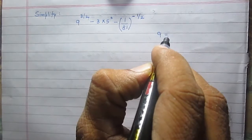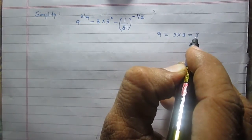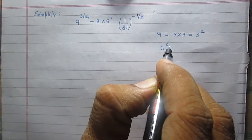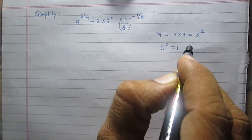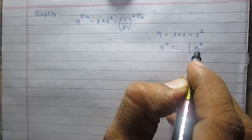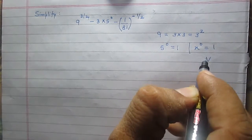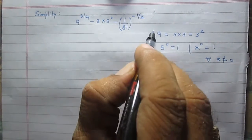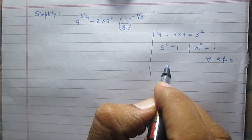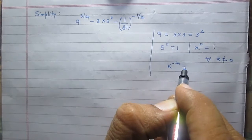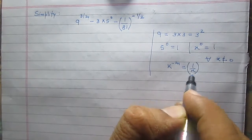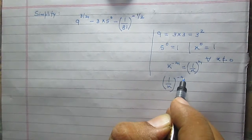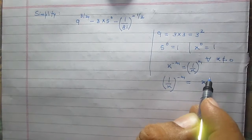We know that 9 is 3 multiplied by 3, so it is 3 raised to the power 2. Also, 5 raised to the power 0 is 1, because anything raised to the power 0 equals 1, provided x is not equal to 0. The third rule of exponents: x raised to the power minus m is 1 upon x raised to the power m, and similarly 1 upon x raised to the power minus m equals x raised to the power m.